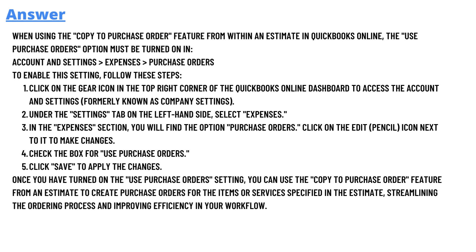Then, under the Settings tab on the left side, select Expenses. In the Expenses section, you will find the Purchase Order option — click on the edit icon next to it to make changes. Then check the box for 'Use Purchase Orders' and click Save to apply the changes. Once you have turned on the purchase order setting, you can use the copy to purchase order feature from an estimate to create a purchase order for the items or services specified in the estimate, streamlining the ordering process and improving efficiency in your workflow.